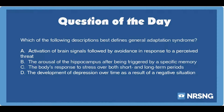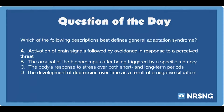The correct answer is C. The body's response to stress over both short and long-term periods. General adaptation syndrome is a stress response in which the body modifies its reaction to stress. Initially, the body alters its response in reaction to short-term stressful events. Over time, general adaptation syndrome develops as the body adapts to long-term or chronic levels of stress.